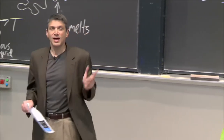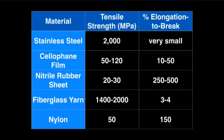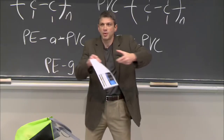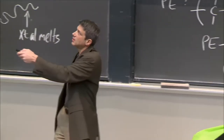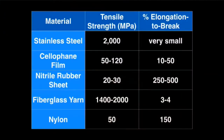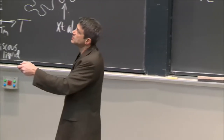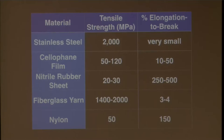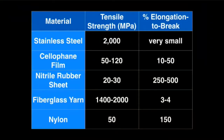Looking at mechanical strength - tensile strength vs. elongation until break. Steel has very high tensile strength but low elongation. Nylon is not nearly as strong but has much more elongation. Fiberglass - plastic reinforced glass - gives a lot of strength with very little flexibility, around 3-4% elongation. Cellophane can be naturally occurring or synthetic. The key point is how different polymers trade off between strength and stretchability.